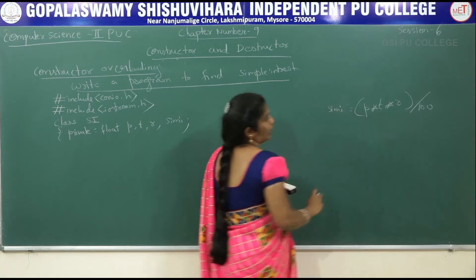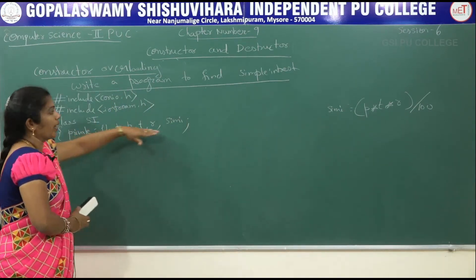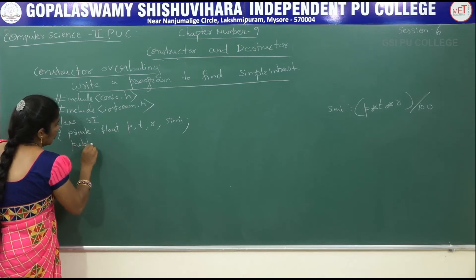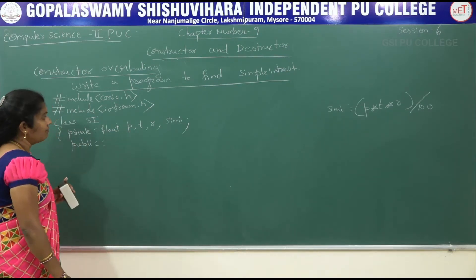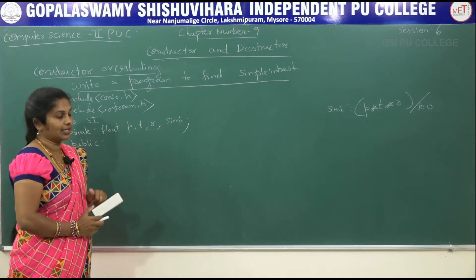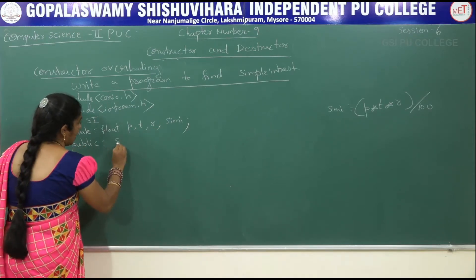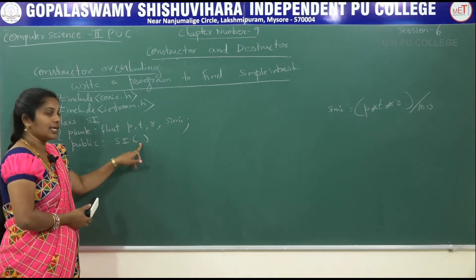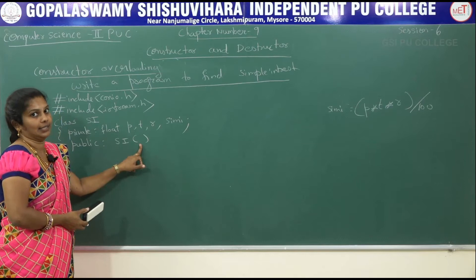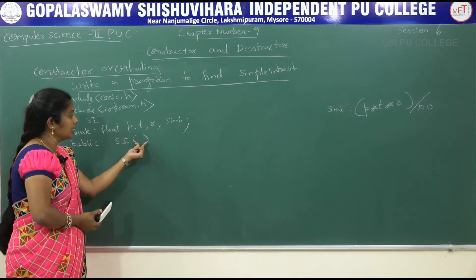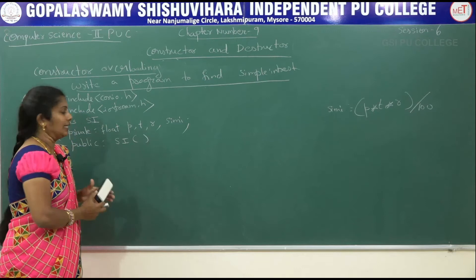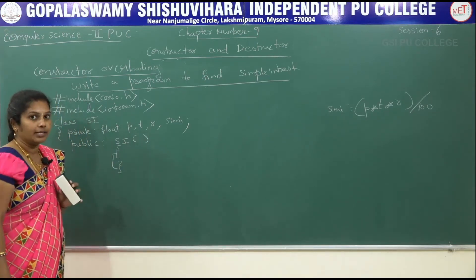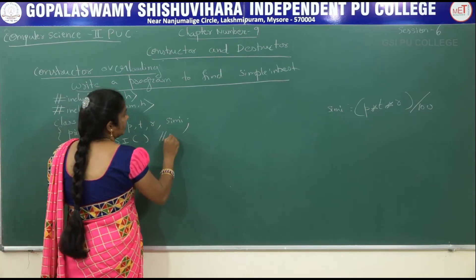Simple interest equals P, T, R divided by 100 — these are the variables we declared. Now in the public section we are writing the functions. First function: SI with empty bracket. Which type of constructor is it? It is a default constructor. How can I say it is a default constructor? Because it does not have any argument inside it. Here I can create one default constructor.